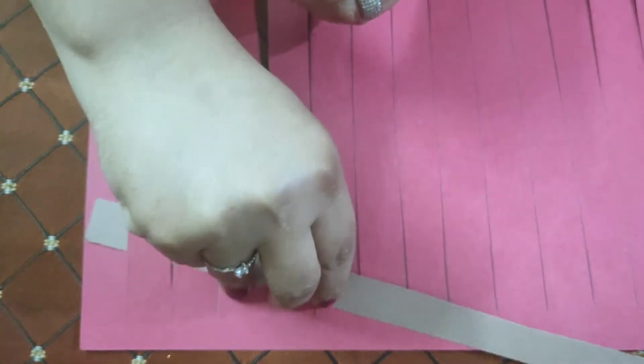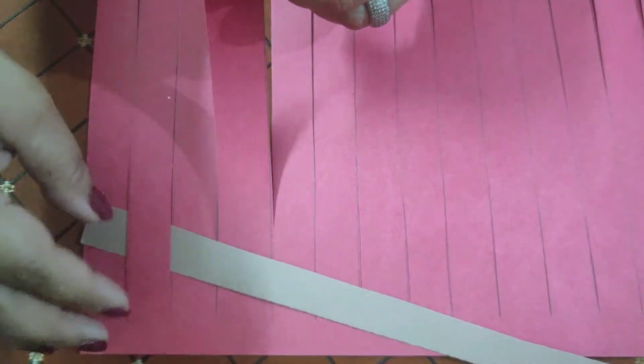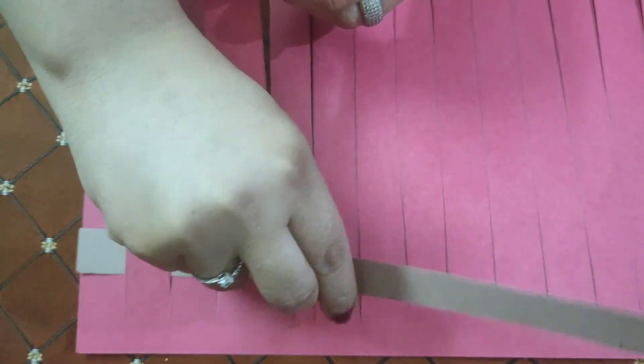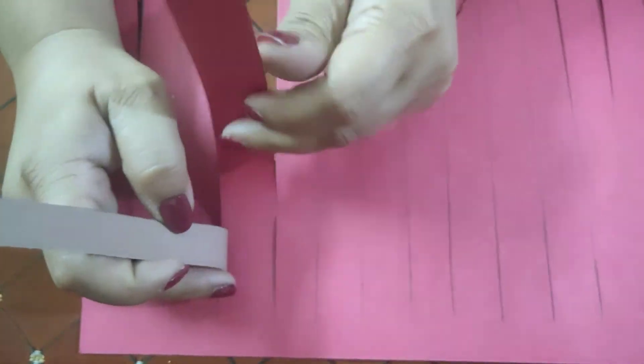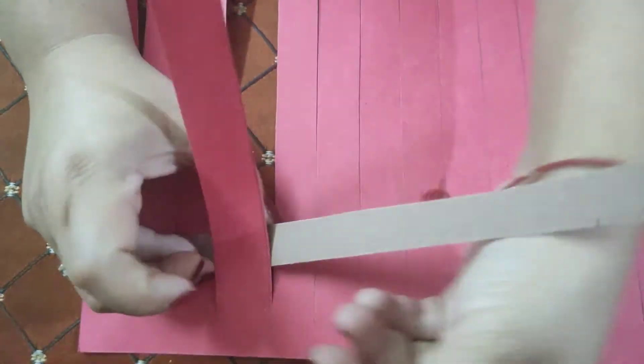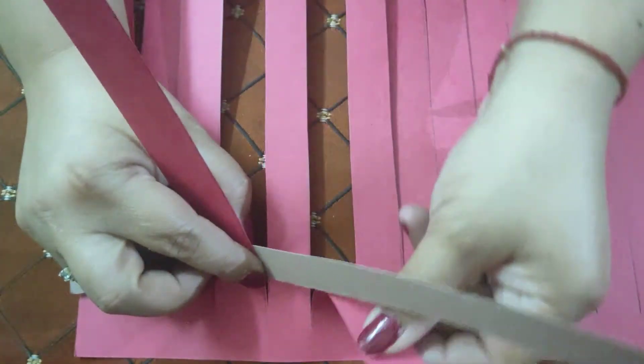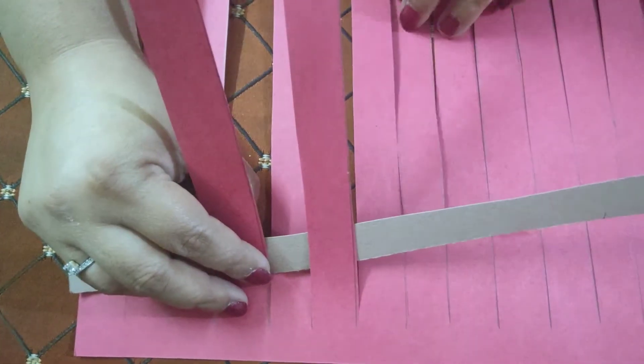We will be lifting alternate strips and then arranging each strip so that it comes over one strip and then under the next strip, like this.